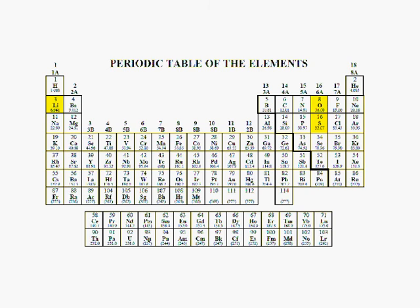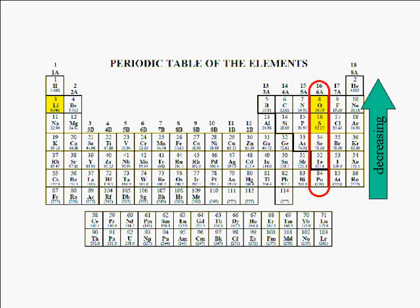You'll note that sulfur and oxygen are in the same group, group 6A. The trend going up a group is decreasing. Therefore, oxygen is smaller than sulfur.